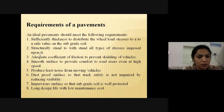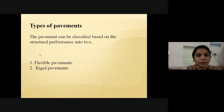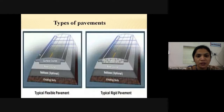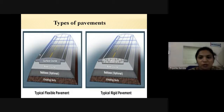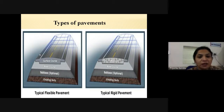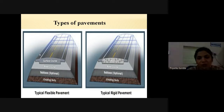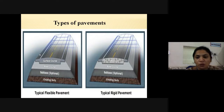There should be a long design life with low maintenance cost. There are two types of pavement: flexible and rigid pavement. In a typical flexible pavement and rigid pavement, the first layer is existing soil, then sub-base, then base course, and then surface course. The difference is that in flexible pavement there is a surface course, and in rigid pavement there is a PCC layer.